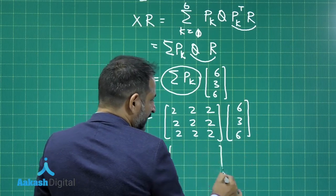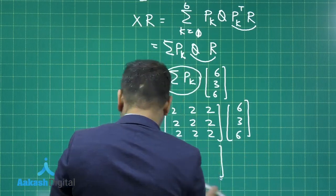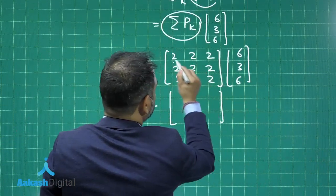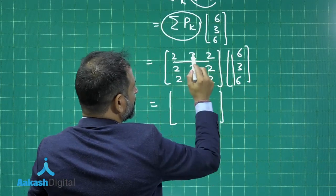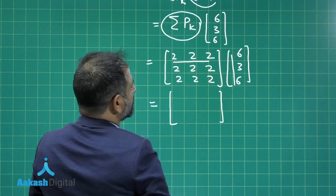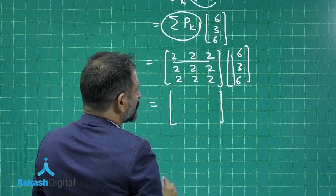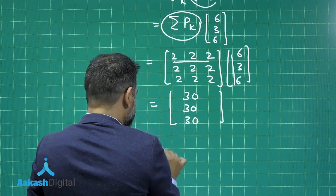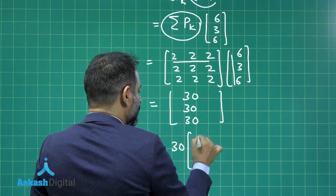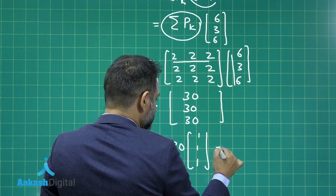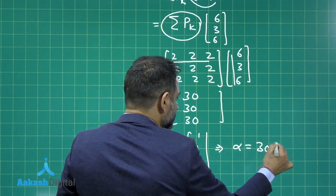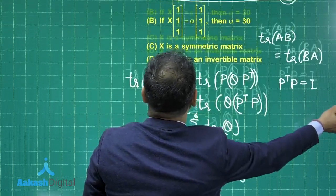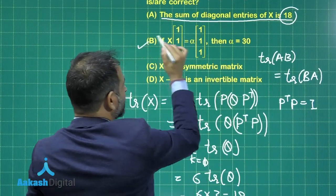Calculating the final value: all the P matrices summed give 2,2,2,2,2,2 which can be added up easily, giving the result 6, 3, 6. Then this into 6 gives 12 + 6 + 12 = 30, and each component is 30. So this is 30 times [1,1,1]ᵀ, meaning α equals 30. So option 2 is definitely the correct option.